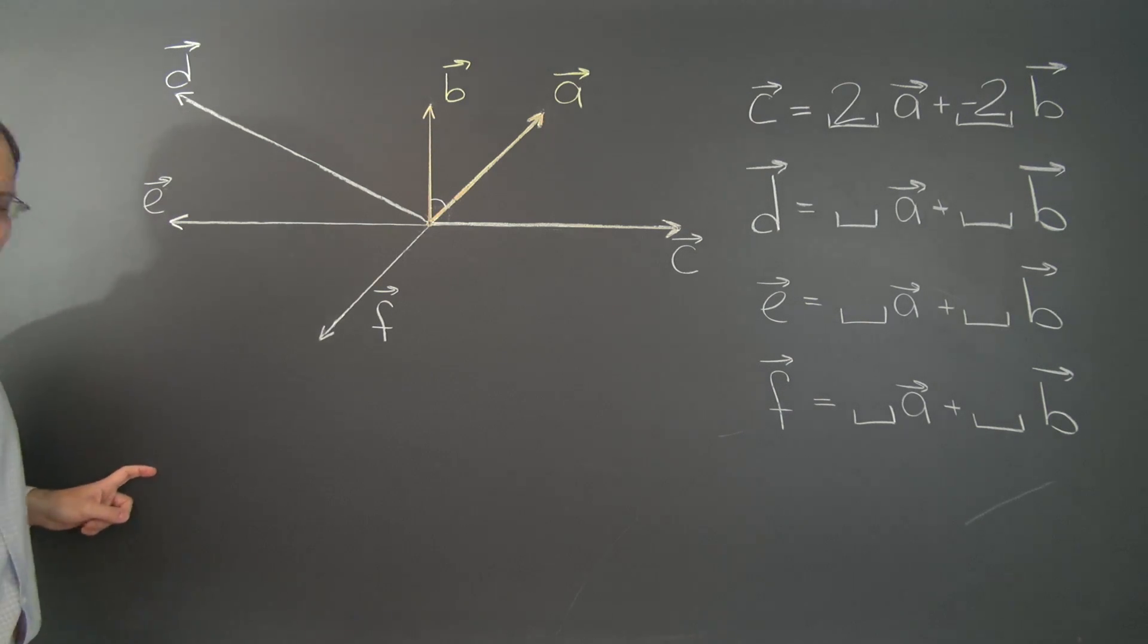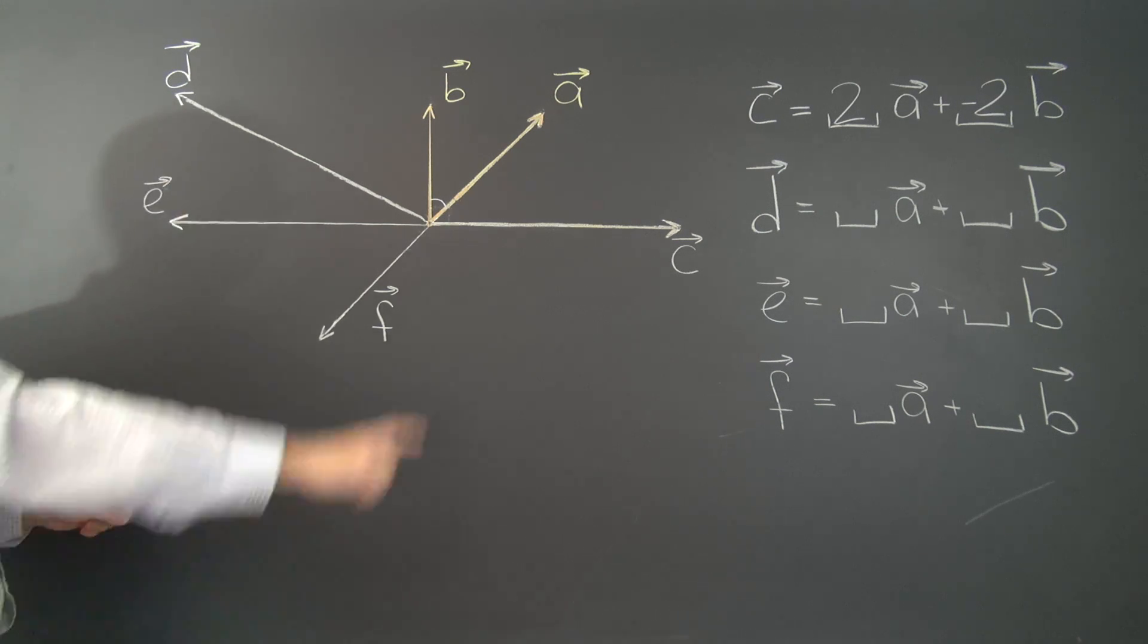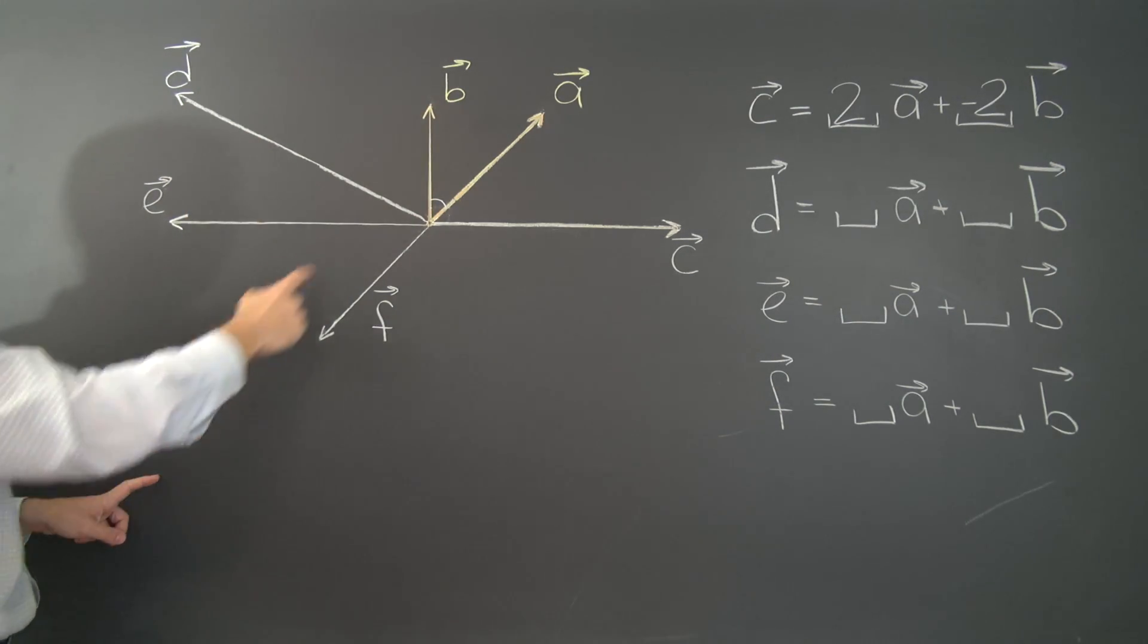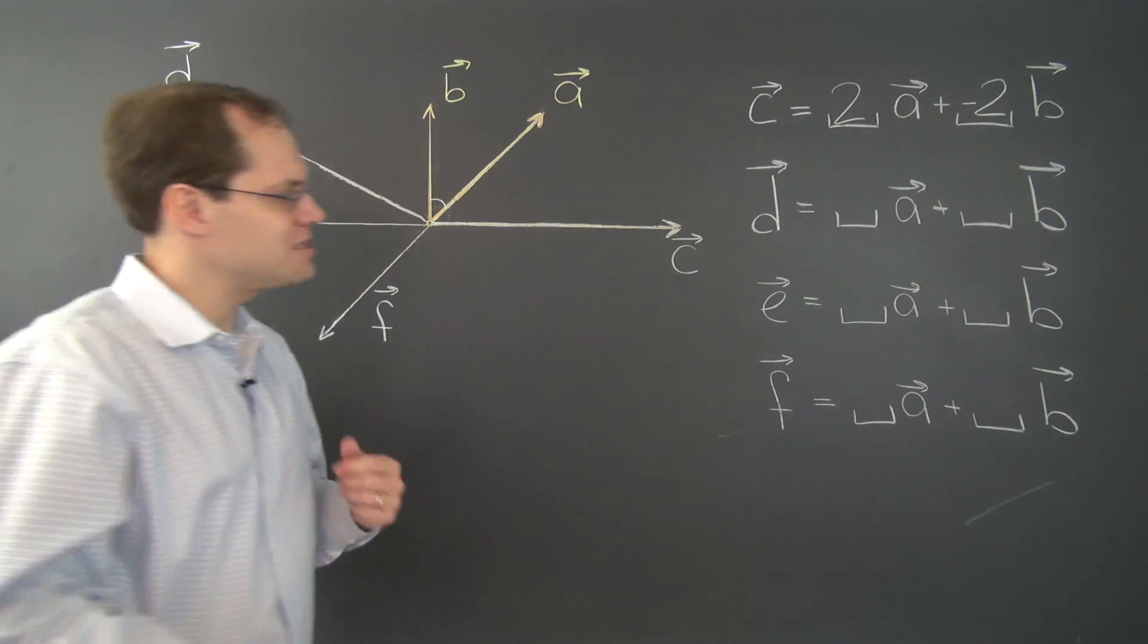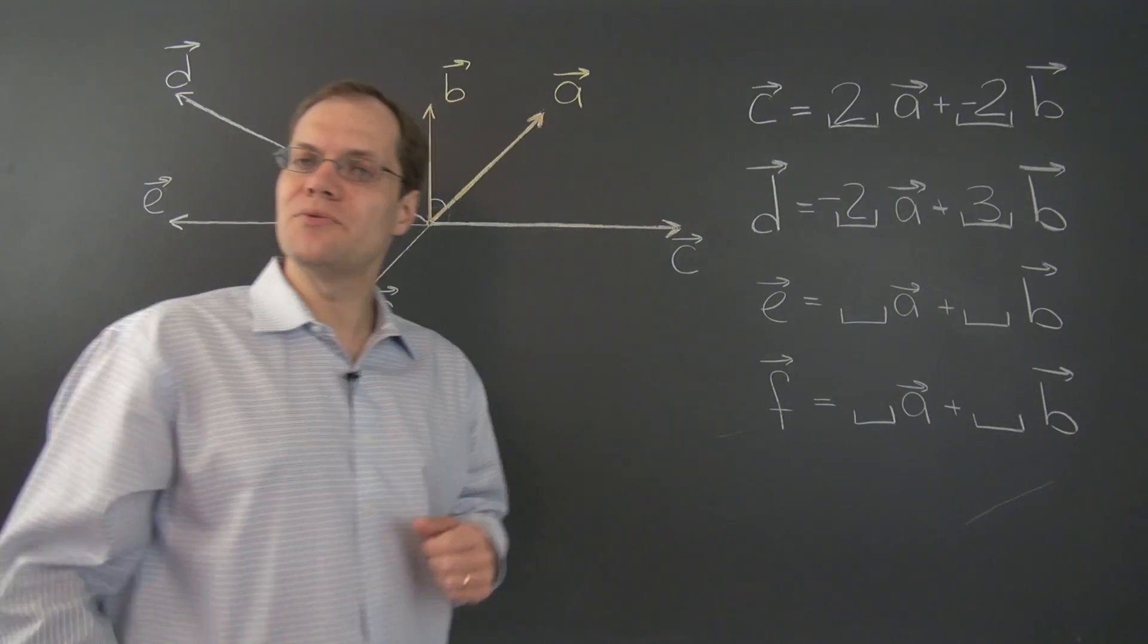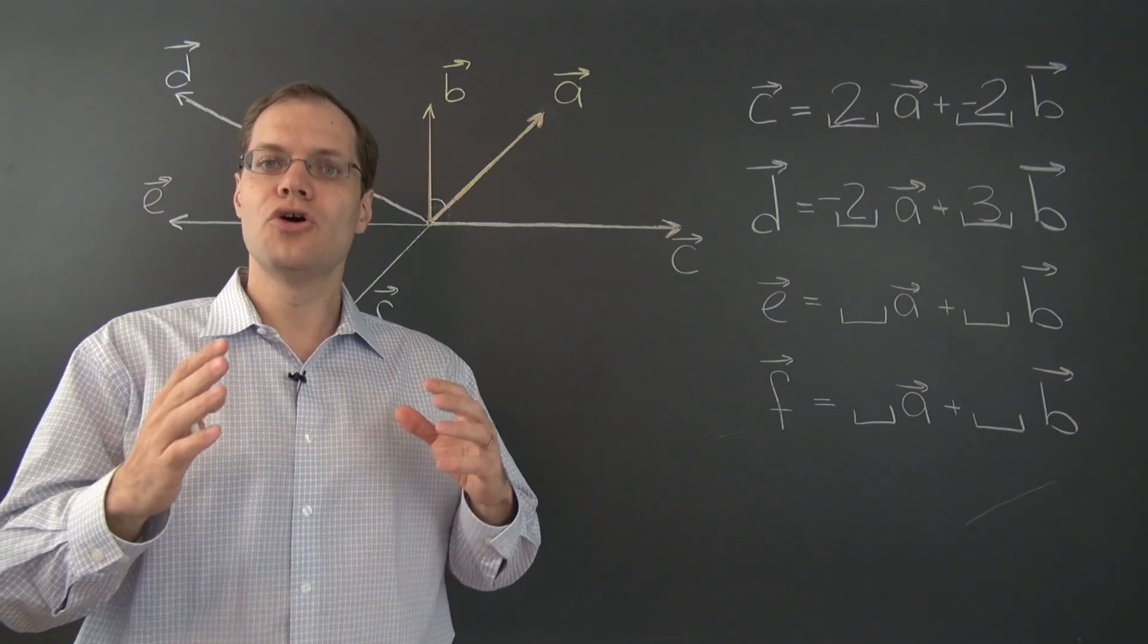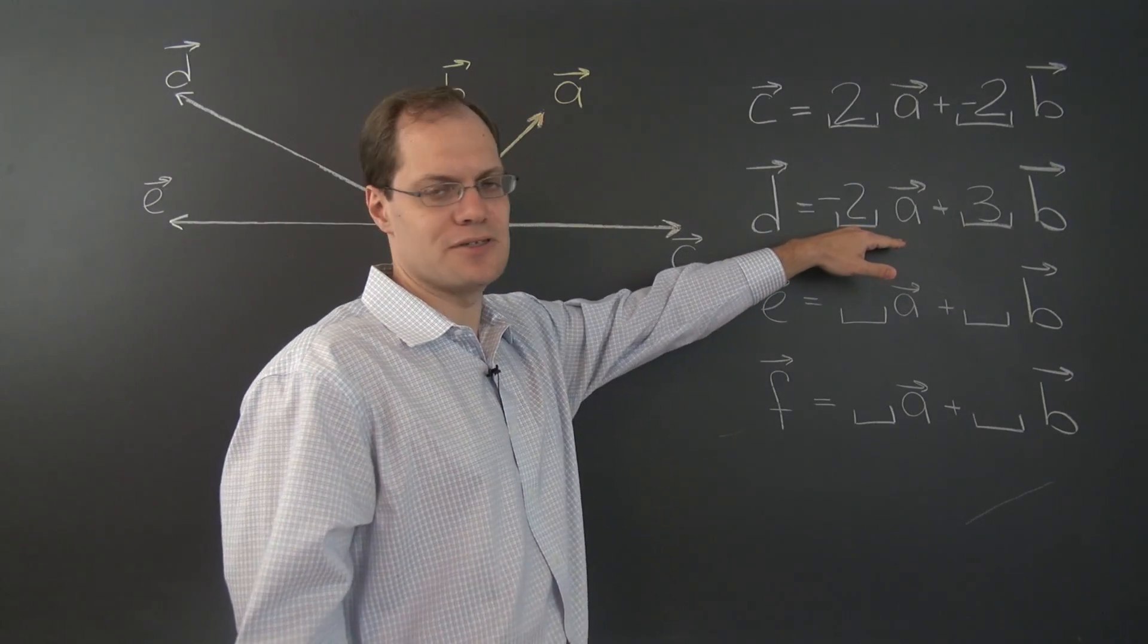Minus 2a, let me make it as accurate as I can, puts me right here. And once I'm here with minus 2a, I can use b to get back to d in three steps. One, two, three. So my drawing is imperfect. Had it been a little bit more perfect, this would have been easy to see. But it really is three steps, three b steps to d from this point.